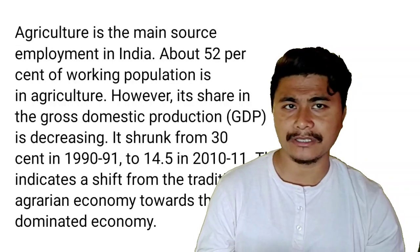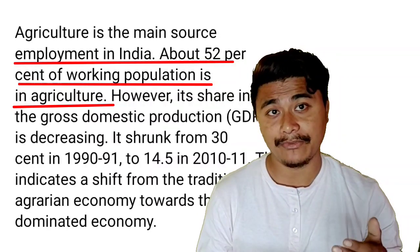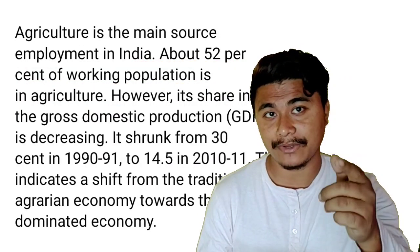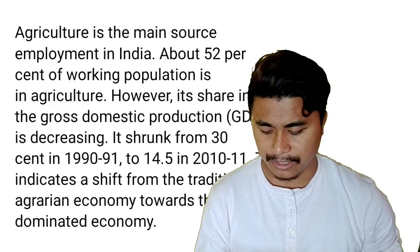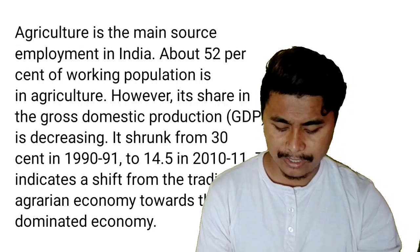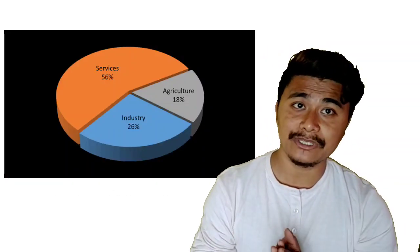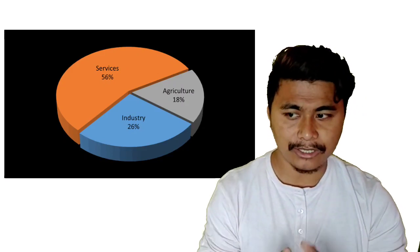Our country is an agricultural country. The main source of income in our country comes from agriculture. Around 52 percent of the working population is engaged in agriculture, meaning people are dependent on agriculture for their livelihood. Not only that, 14.5 percent of GDP comes from agriculture, though it was around 30 percent a decade ago. Agriculture holds 18 percent of total GDP including forestry and fishing.